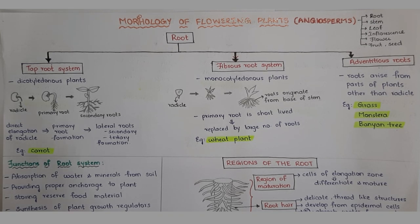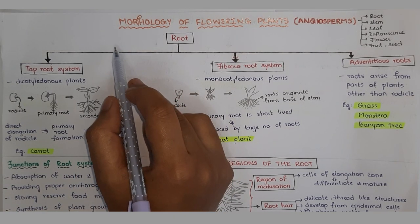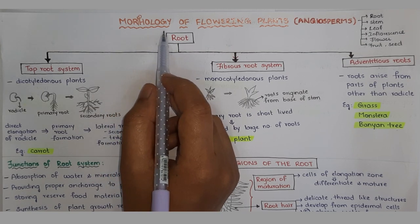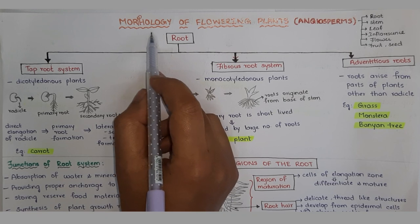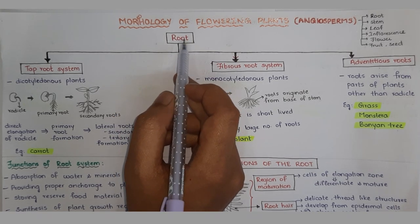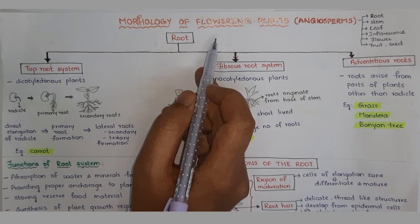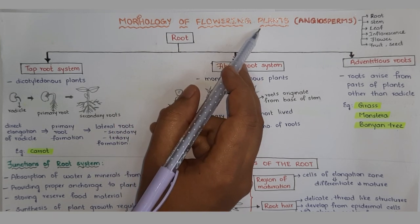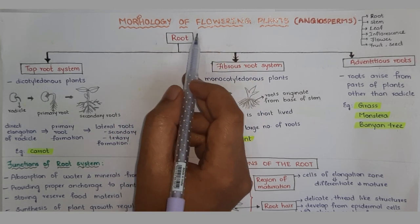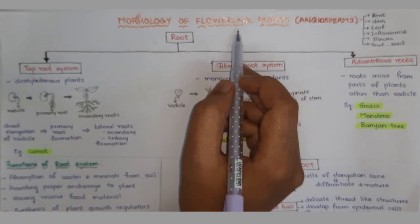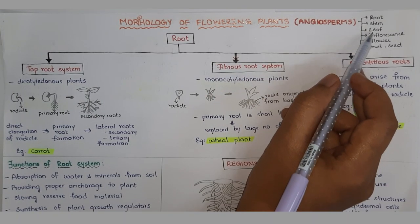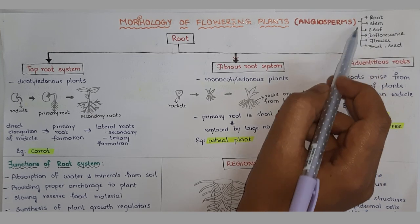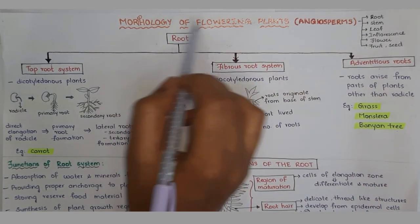Before we start, let's understand the term morphology. Morphology is the study of physical form or external structure of anything. As we are studying about plant morphology here, we are studying about the external structure of plants which we can see — that is root, stem, leaf, inflorescence, flower, fruit, and seed — which we will cover in detail in this chapter.